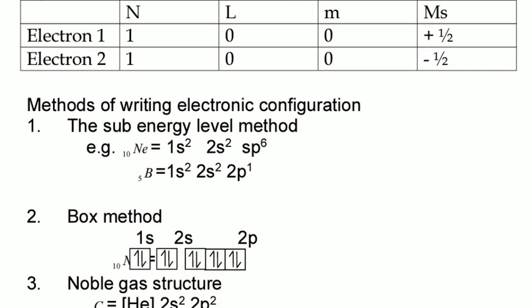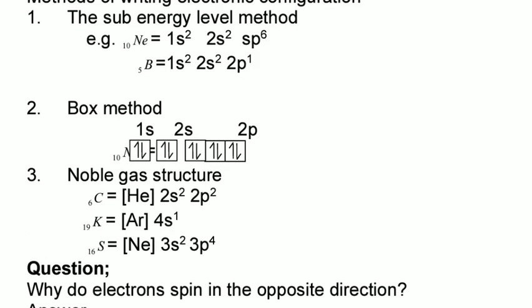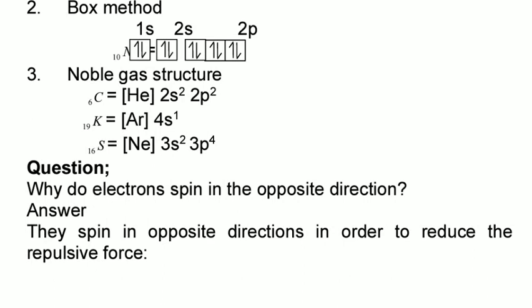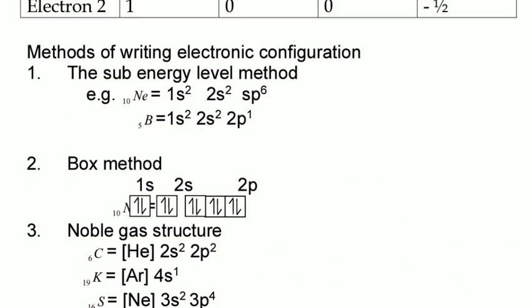There are different methods of writing electronic configuration. You can use the sub-energy level method, where for example 1s² means principal quantum number 1, sub-level s, and 2 is the number of electrons. 2p⁶ means we have six electrons. We also have the box method and the noble gas structure. I will be explaining all these in my illustration videos.